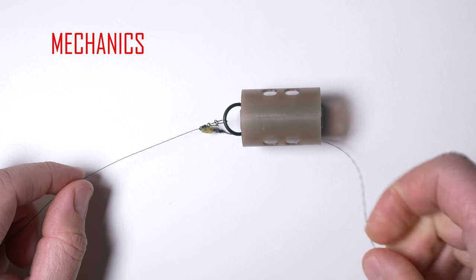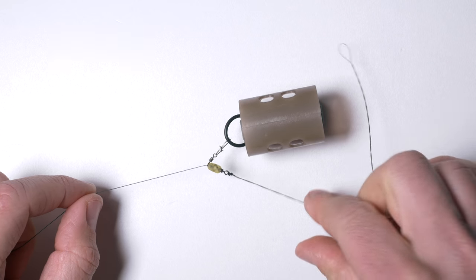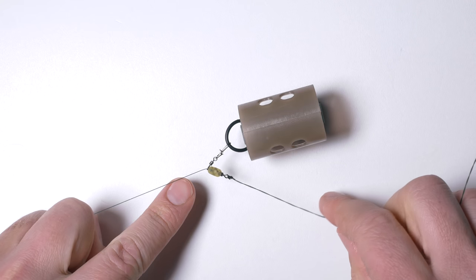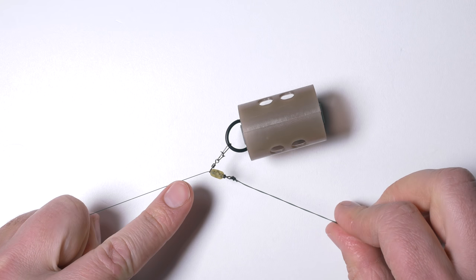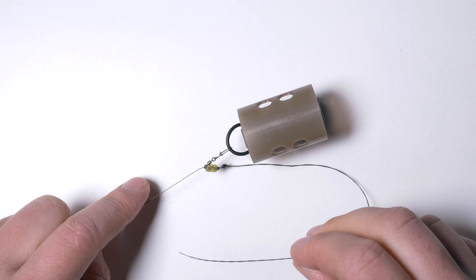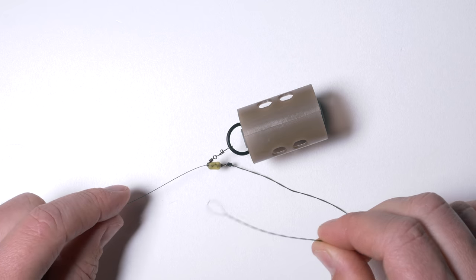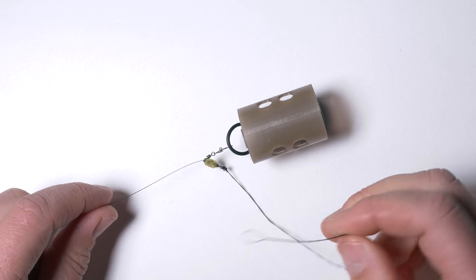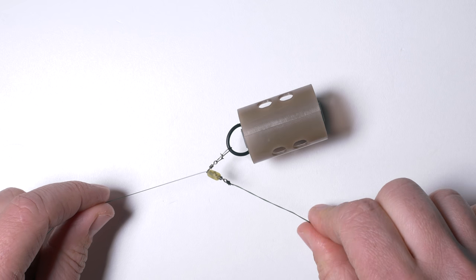The mechanics of this rig are very simple. I have a swivel which is between the feeder and the hook bait. So when the hook link wants to spin because the bait wants to spin, the swivel will start to spin.